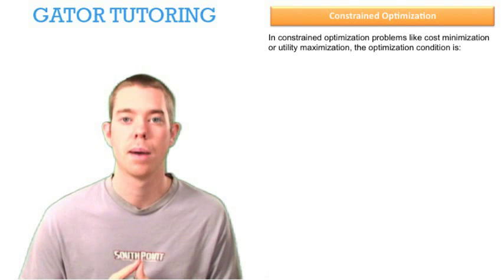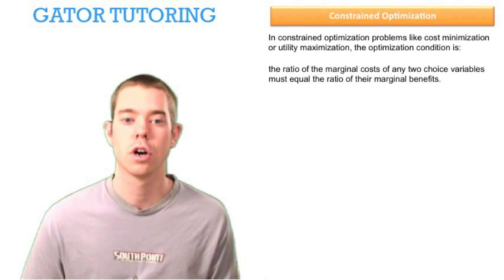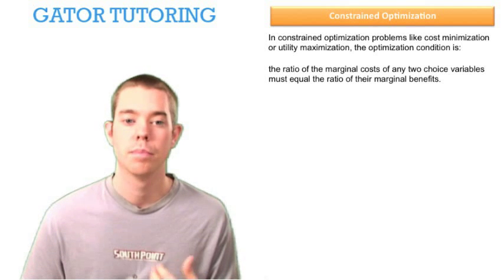In constrained optimization problems, like cost minimization or utility maximization, the optimization condition is: the ratio of the marginal cost of any two choice variables must equal the ratio of their marginal benefits.